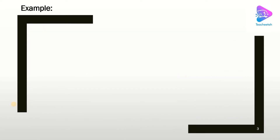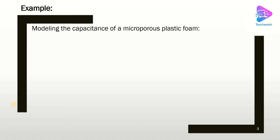As usual, let's see what examples we are going to solve. We are going to find the capacitance of a microporous plastic foam such as what we have in some capacitors. In this study, we are going to model a porous medium using an image. This image could be from a CT scan, scanning electron microscopy, or even an optical image — it depends on how we take the picture.